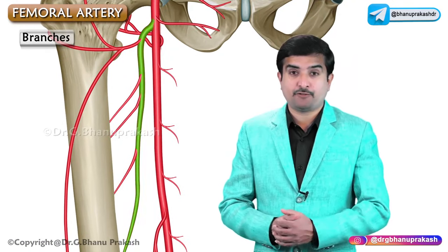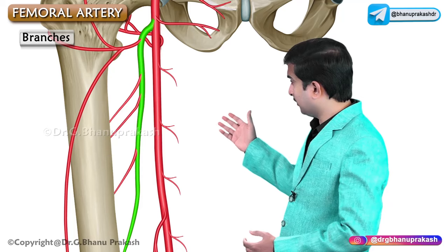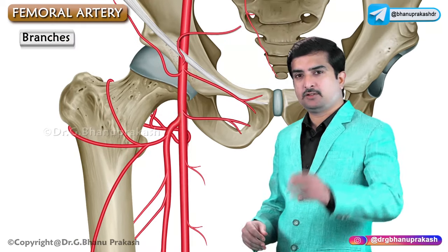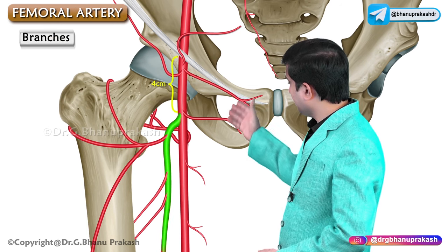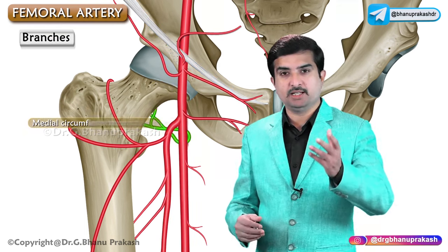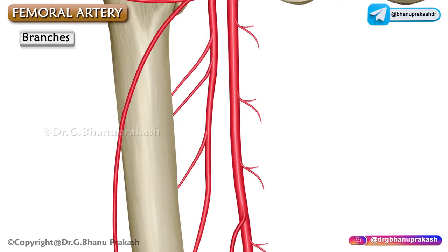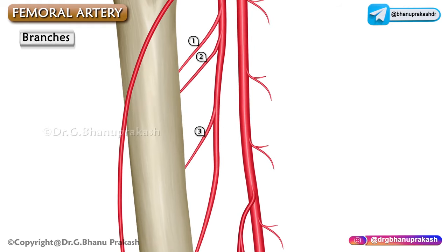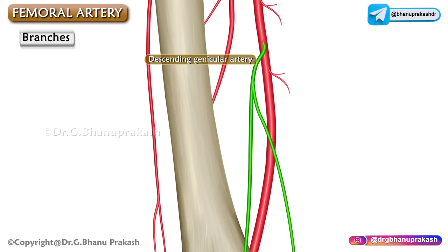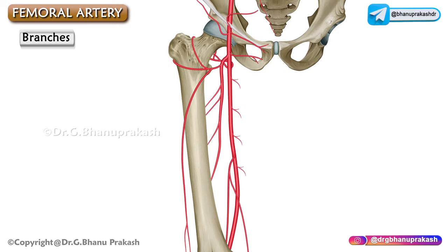The profunda femoris artery is the largest branch of the femoral artery. It arises from the lateral side, about four centimeters below the inguinal ligament, and gives off the medial and lateral circumflex femoral arteries. It also gives off three perforating branches and ends as a fourth perforating artery. The descending genicular artery leaves the canal descending within the substance of the vastus medialis, where it divides into articular and saphenous branches.